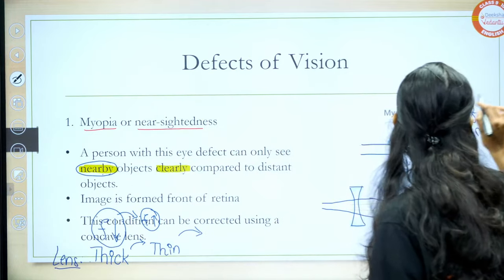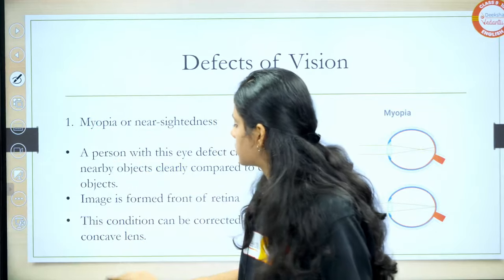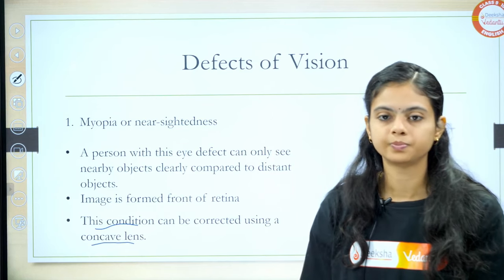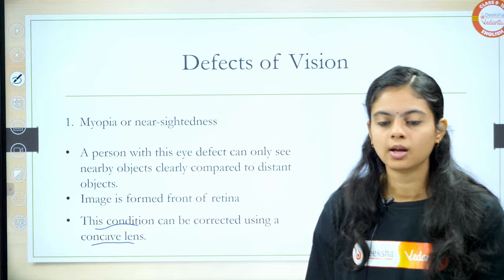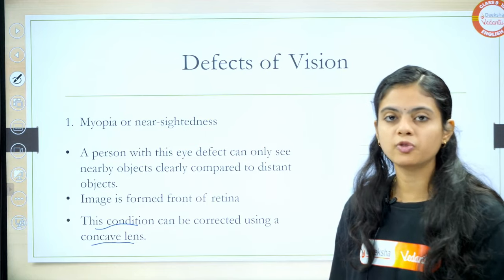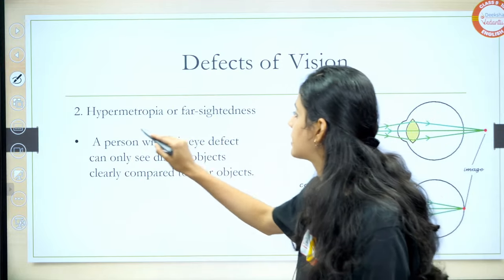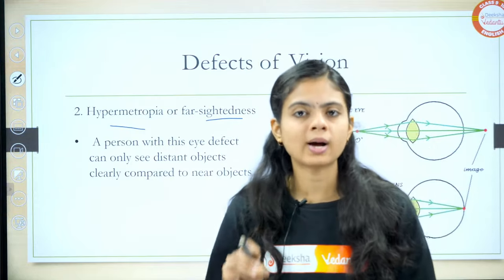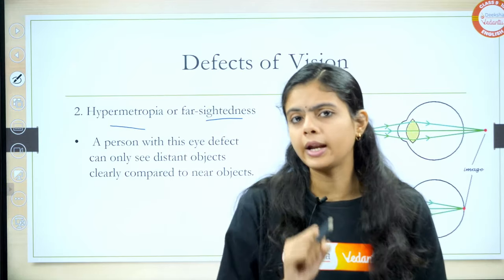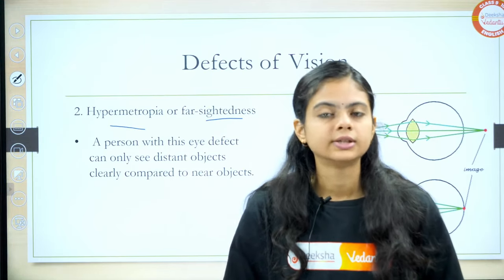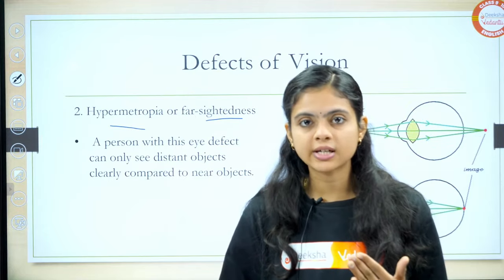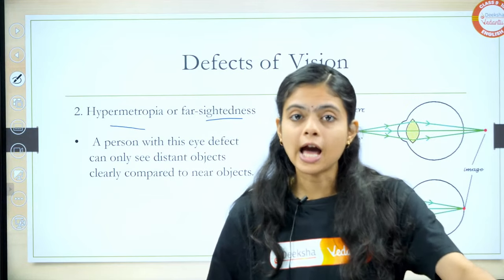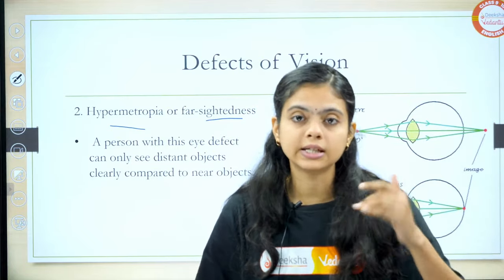Let me raise the slide. In this condition to correct it, we use a concave lens. Shall we move forward? The next defect is hypermetrophia or farsightedness. This is similar to myopia but in the opposite order. In myopia, the person can see near objects clearly but not far objects. In hypermetrophia, you can see far objects clearly but not near objects.